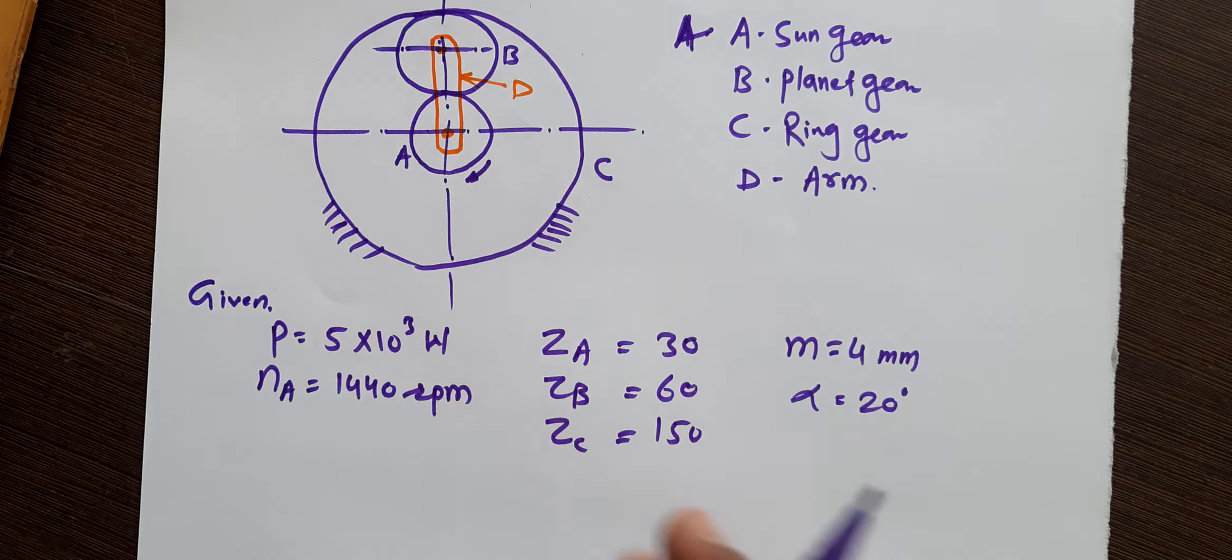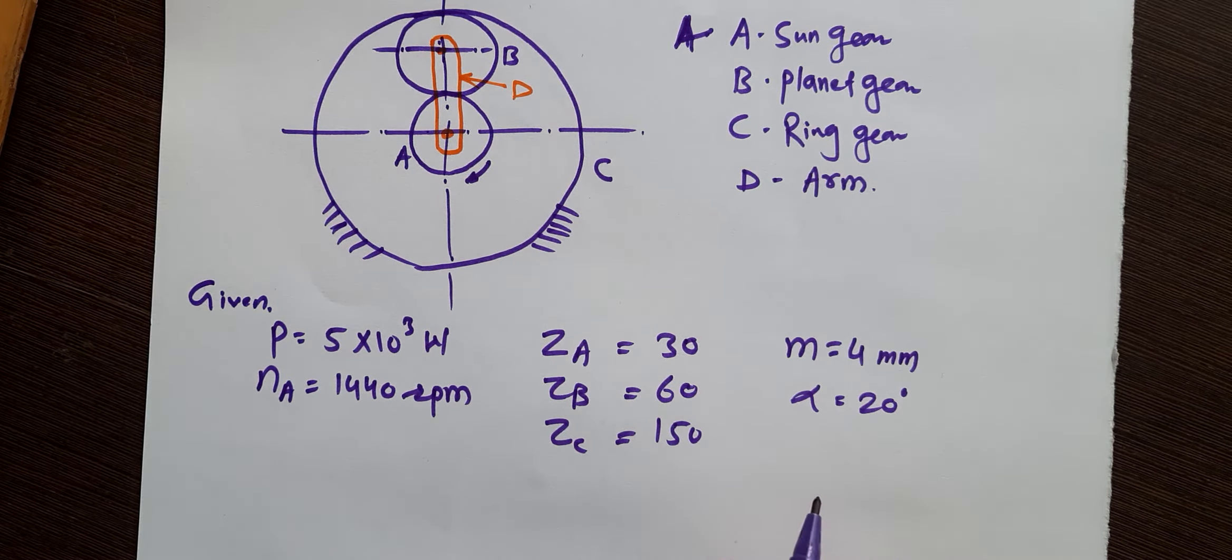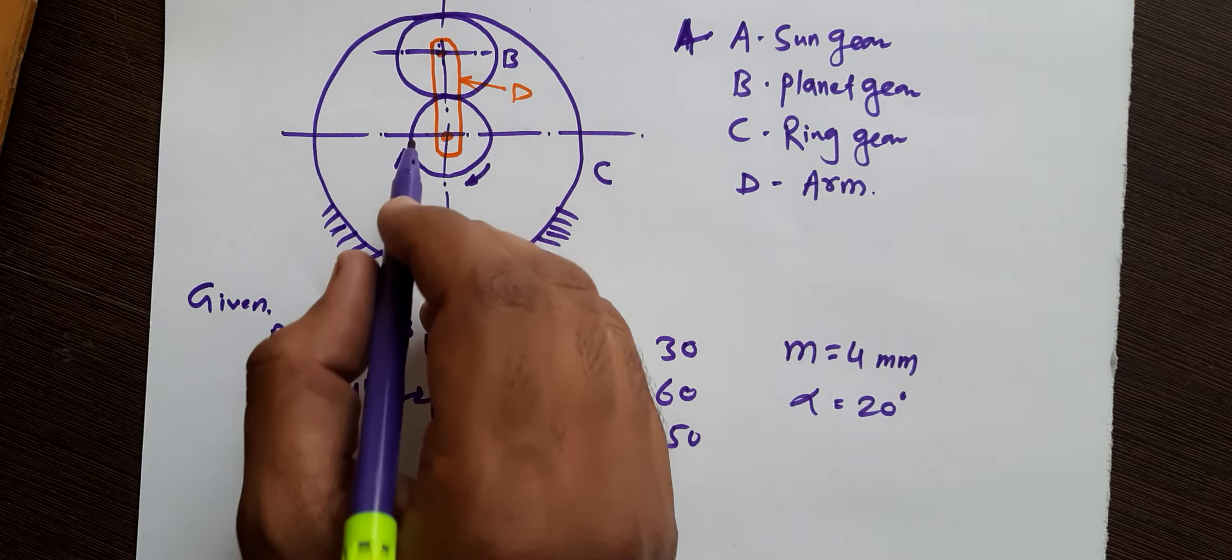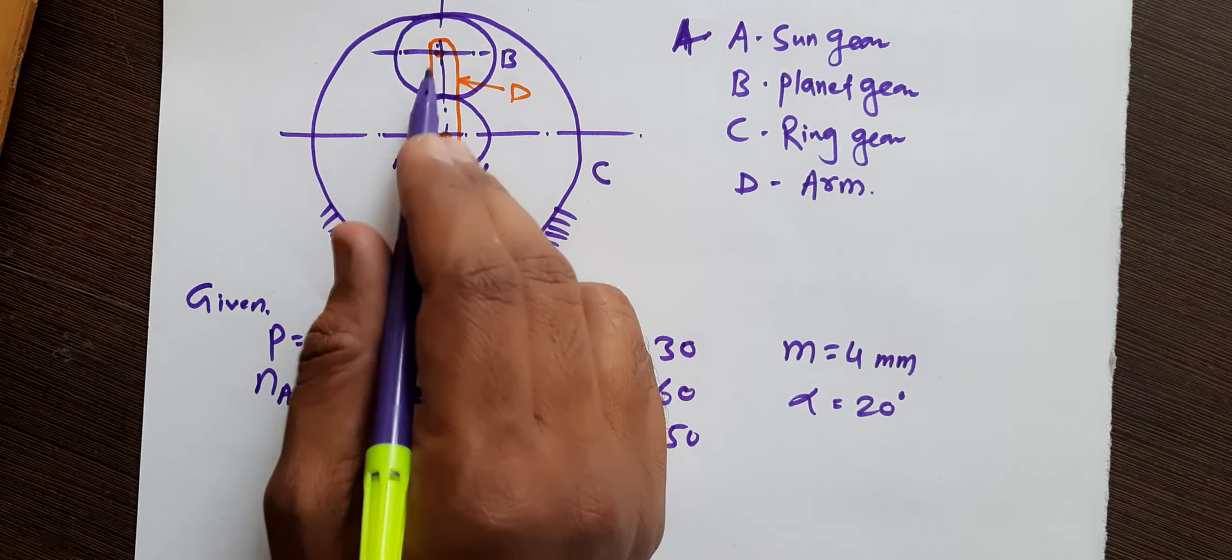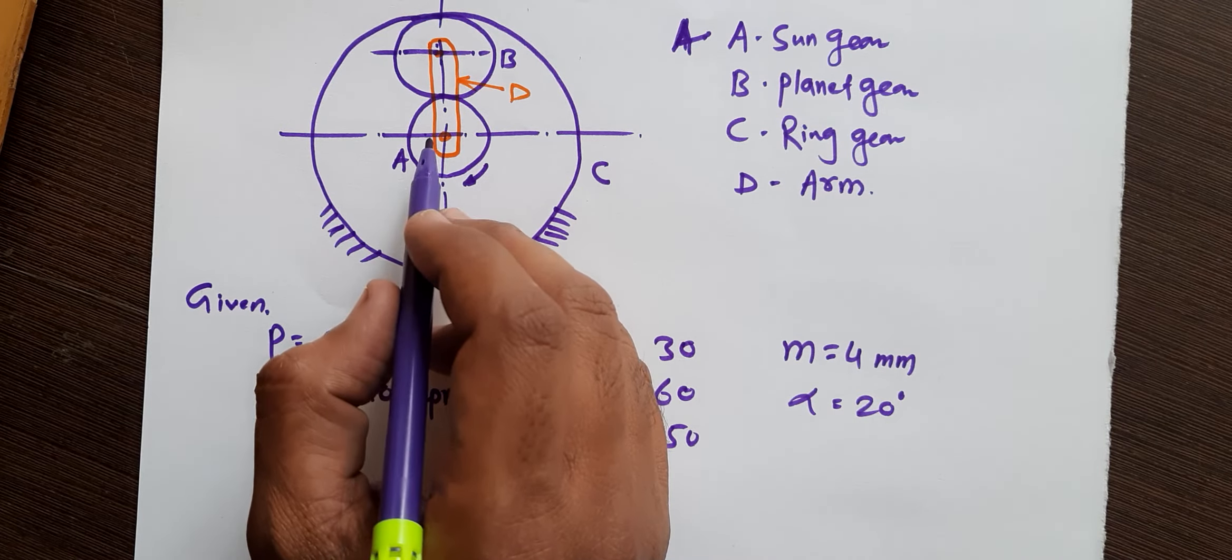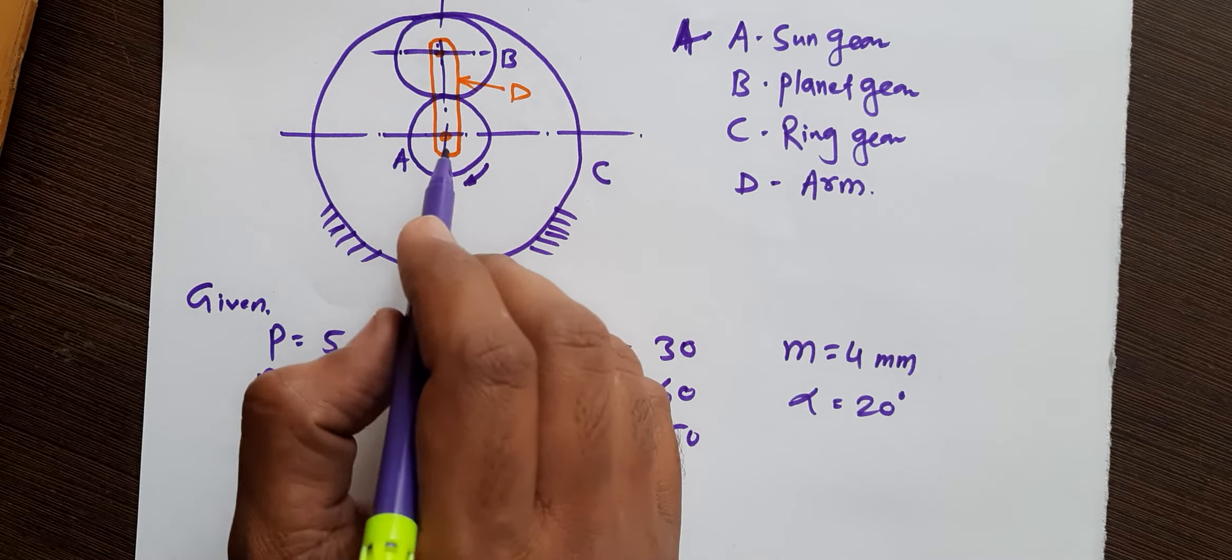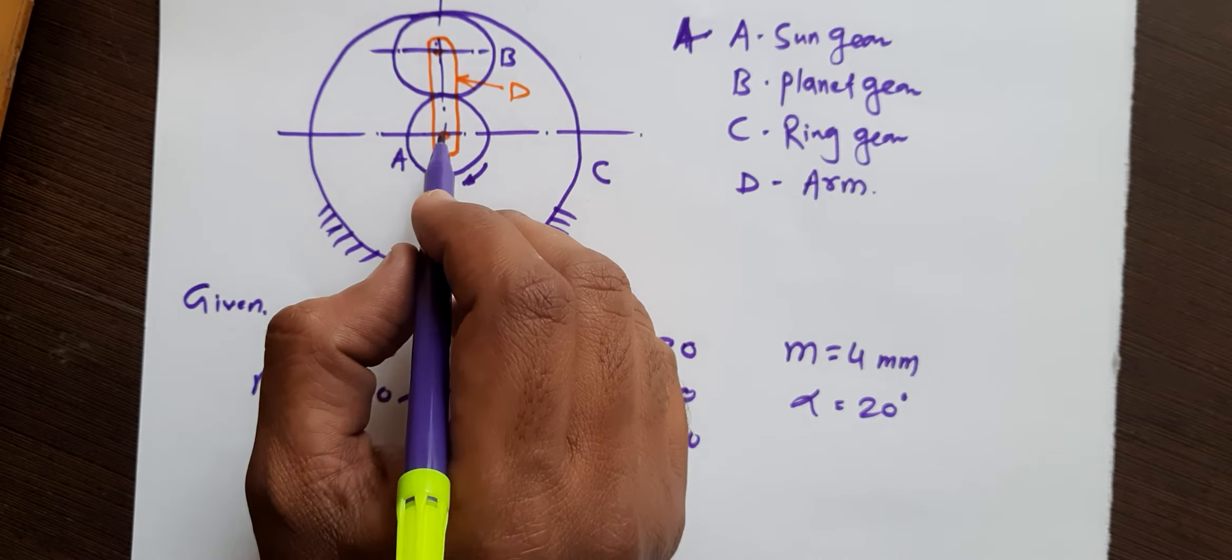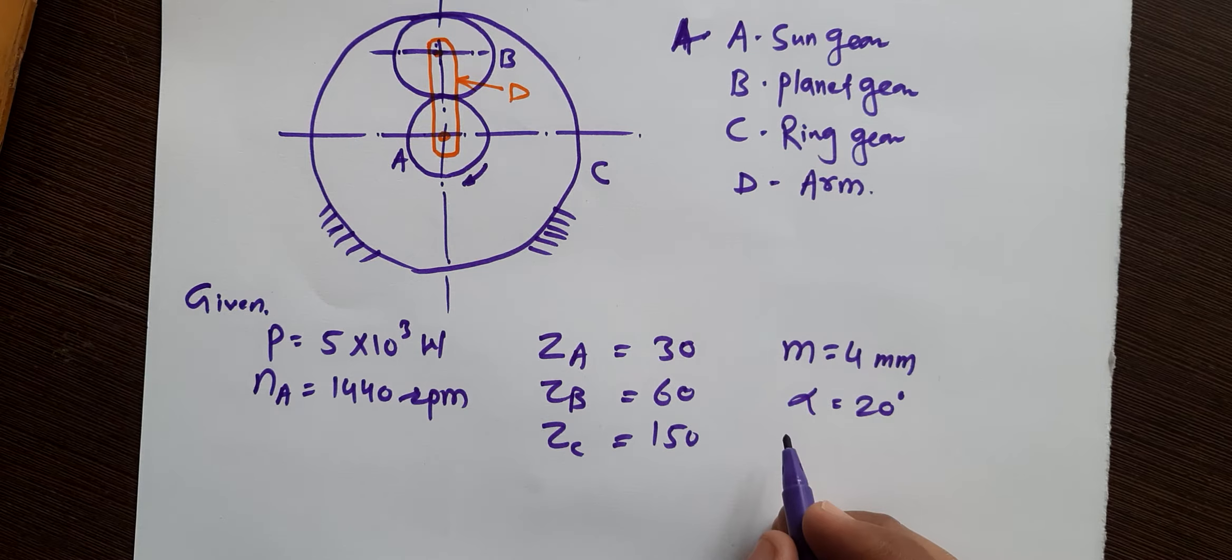So here first we need to draw the force analysis, meaning different forces we need to find, and the torque transmitted or torque that arm D can deliver to its output shaft. So torque on output shaft delivered by this output shaft we have to find. The output shaft will be connected to this arm, so torque on arm D we need to calculate.